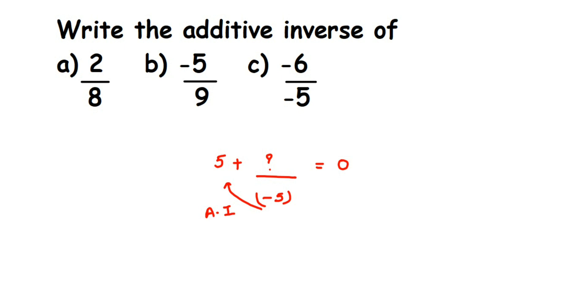Similarly, suppose I have a number -5. What should I add to -5 to get 0? So whatever I'm adding here, that will be the additive inverse. If I add 5 here, it will be 0.